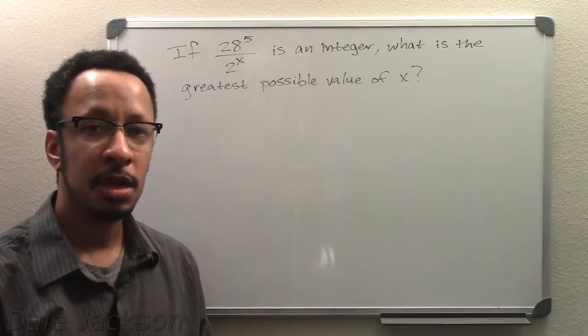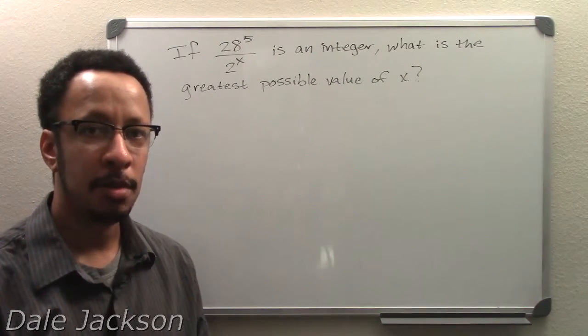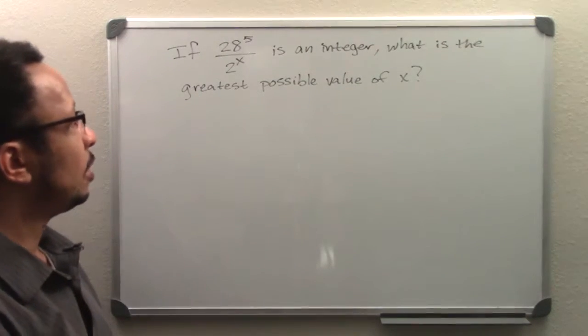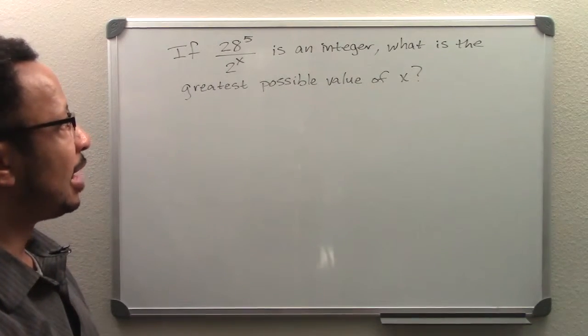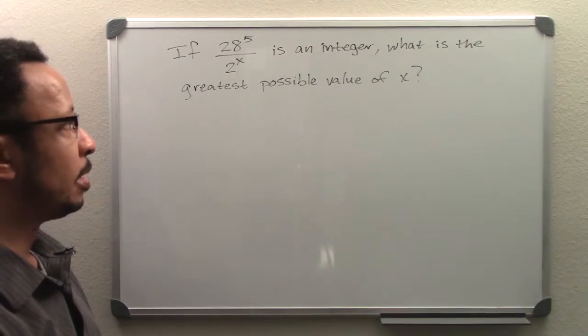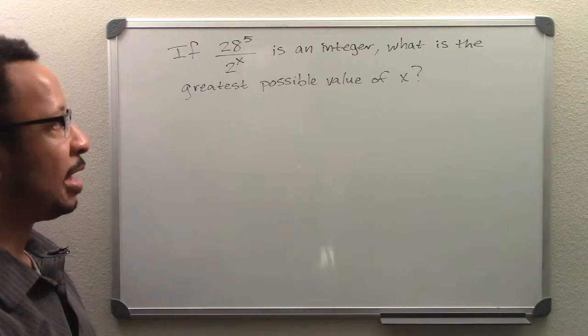Hello everyone, in this video I'll be talking with you about a math problem. The math problem question states: if 28 to the power of 5 divided by 2 to the power of x is an integer, what is the greatest possible value of x?